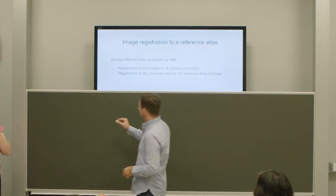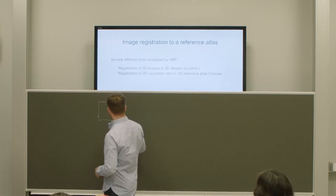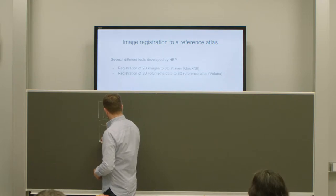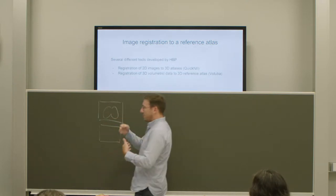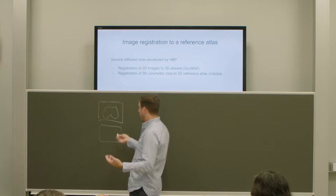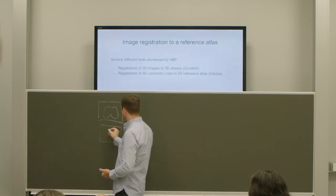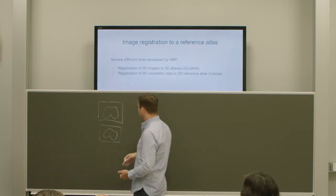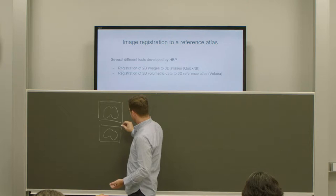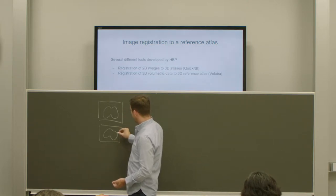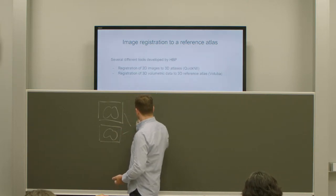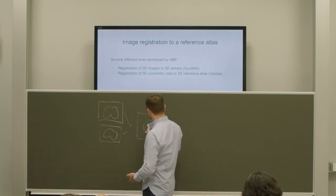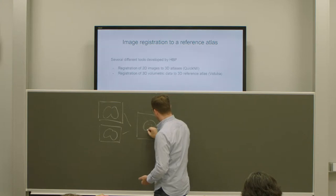In general image registration, you might have, in a very simple case, one image of a section of a brain and another one of the next consecutive section of the same brain or something other. If you just take it on a microscope, it may simply be at a different position. In image registration, what you usually want to do is bring them to the same coordinate system, so that if you combine them they come nicely to an alignment.